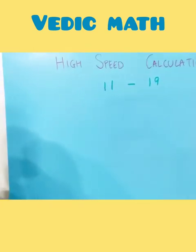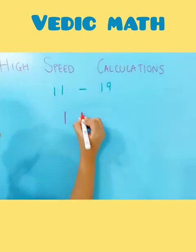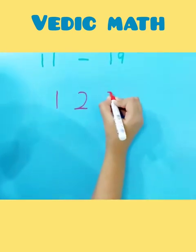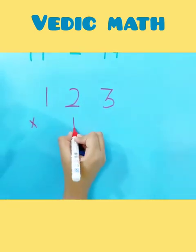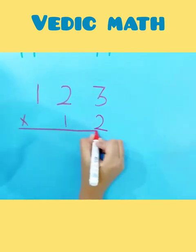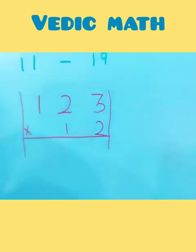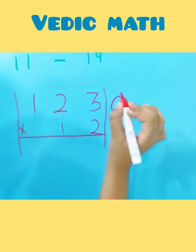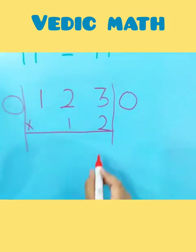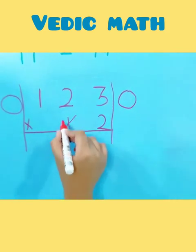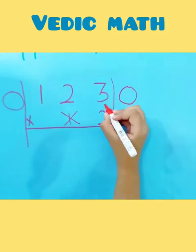Now let's multiply numbers from 12 to 19. Let's consider the number 12 — so 123 multiplied by 12. This is a very simple rule: first make two bars on the corners of the number, then add zeros on the sides.